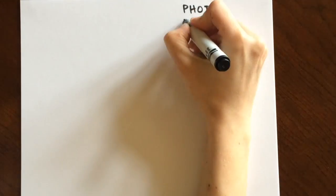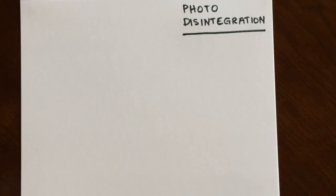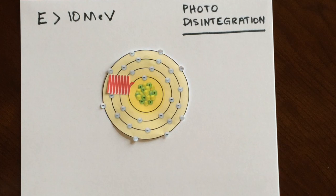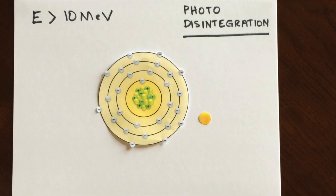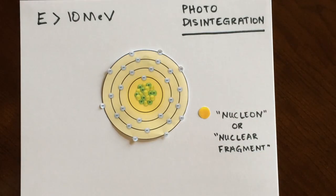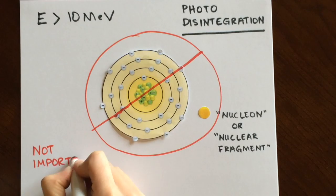In photo disintegration, an x-ray photon with energy above 10 mega electron volts escapes interaction with the electron shells and the nuclear field. The x-ray photon is completely absorbed by the nucleus. The nucleus is raised to an excited state and emits a nucleon or nuclear fragment. This type of interaction does not occur in diagnostic radiology.